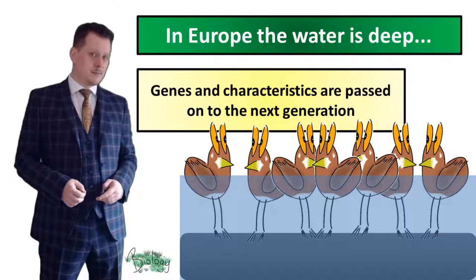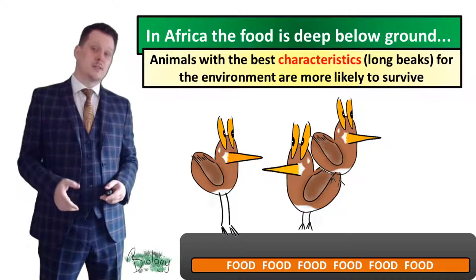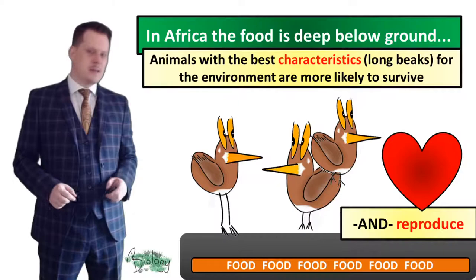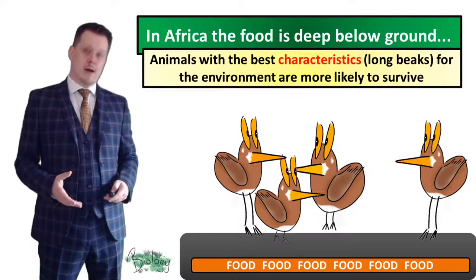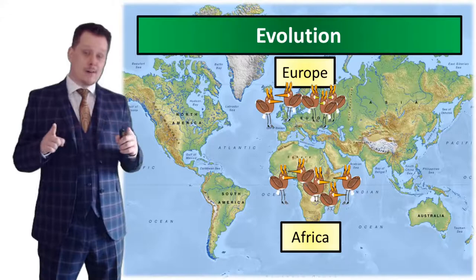Africa has a different set of problems — the food is very deep below ground. This means the animals with the best characteristics, the long beaks, are more likely to survive and reproduce. The long beak gene is passed on to the offspring until eventually all of the birds will have long beaks. Over a long period of time, the birds in Europe will all have very long legs and the birds in Africa will all have very long beaks.